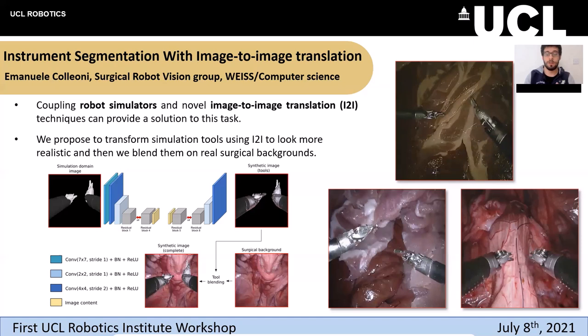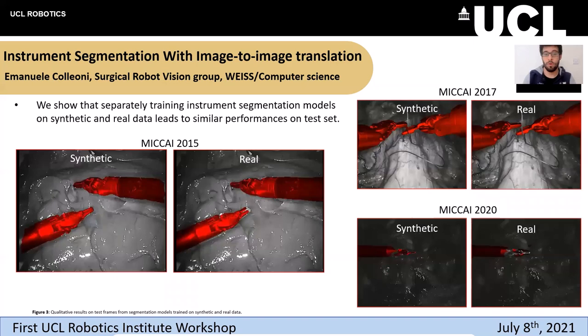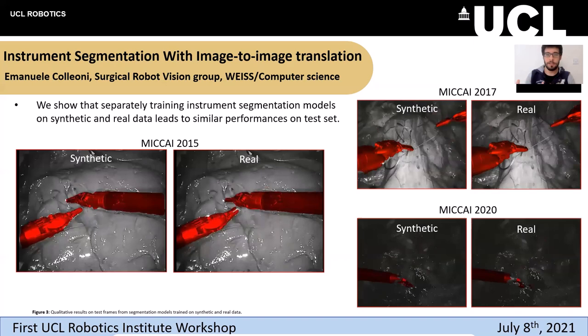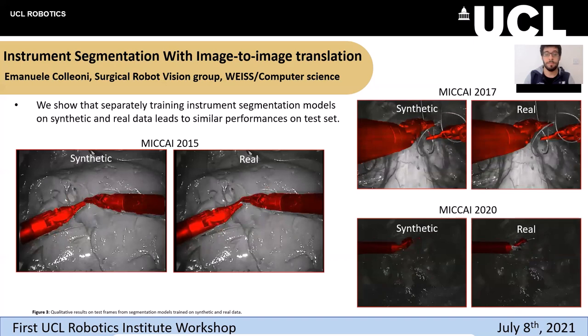Here you can see the results that we obtain by training two different segmentation models: one trained on synthetic data, the other trained on real data. We obtain very promising results, meaning that the synthetic data closely resemble the real ones.